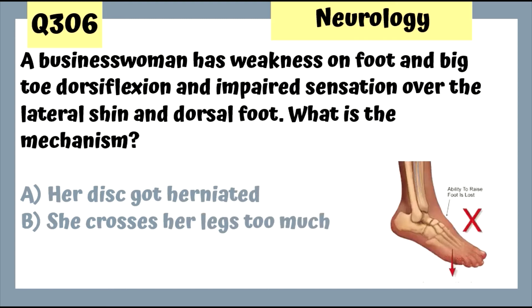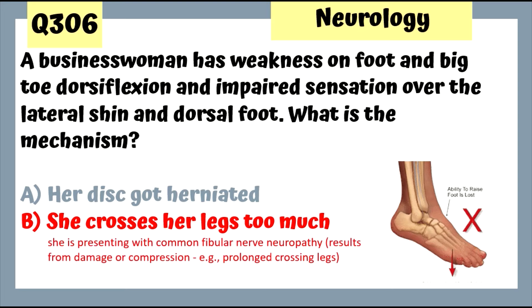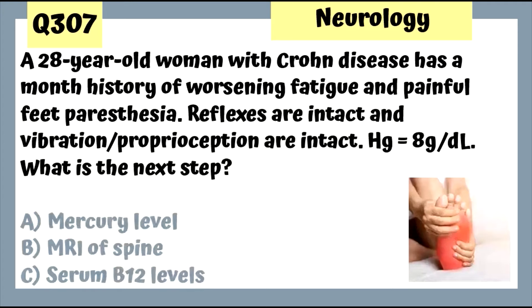Question 306: A businesswoman has weakness of left big toe dorsiflexion and impaired sensation of the lateral shin and dorsal foot — this is a common fibular (peroneal) nerve defect. She crosses her legs too much; common fibular or peroneal nerve neuropathy results from damage or compression such as prolonged leg crossing.